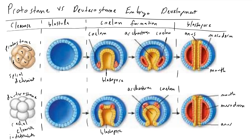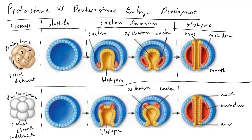It is very important to make a note of this eight-cell stage because once we get enough cells and enter the blastula phase, they both look very similar to each other. The only next difference we're going to find is during the coelom formation. The coelom is the body cavity where internal organs will be stored. In that case, what we see is for protostomes, the coelom splits from the mesoderm.